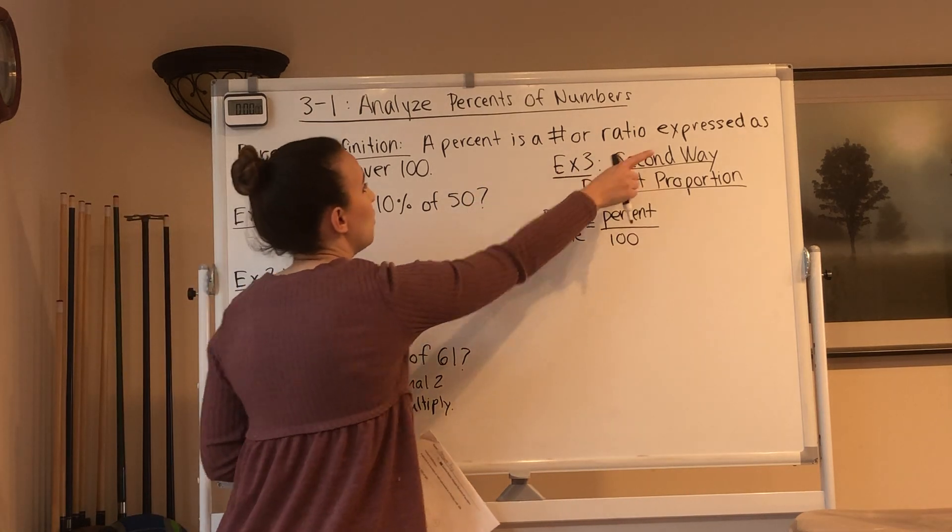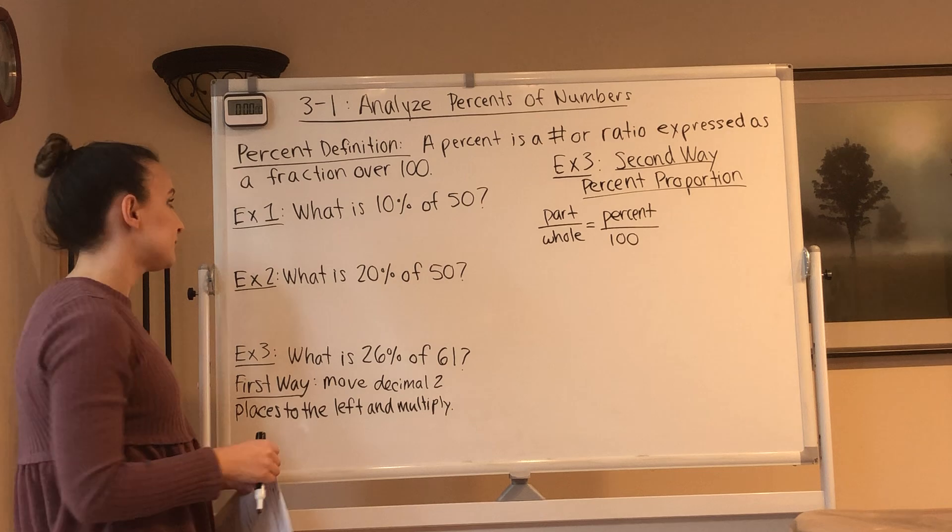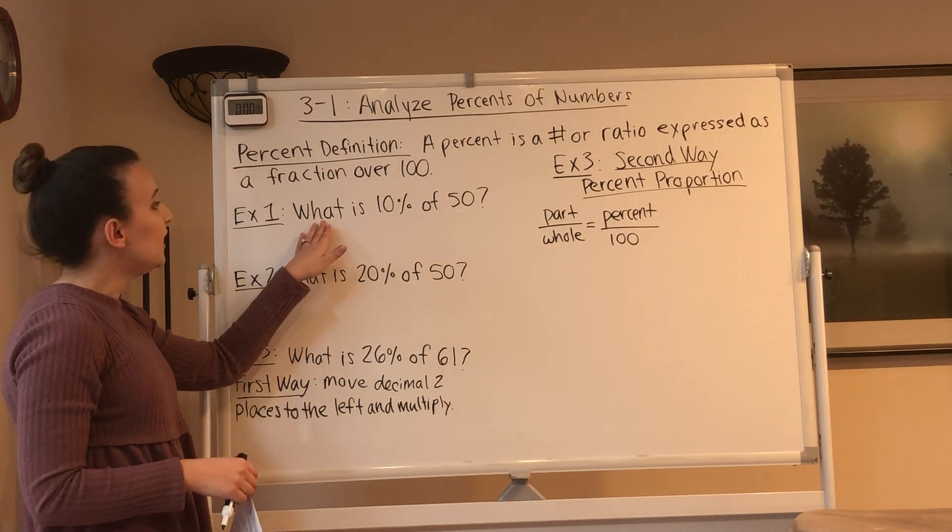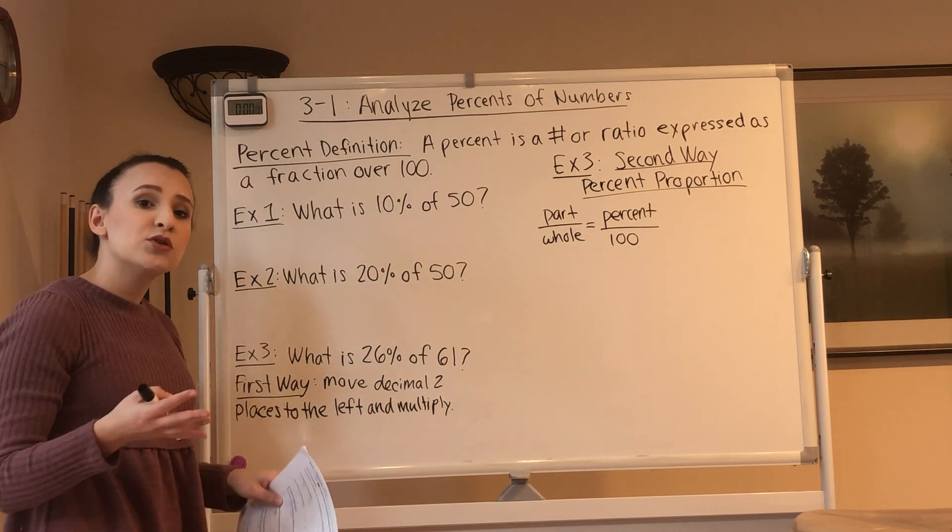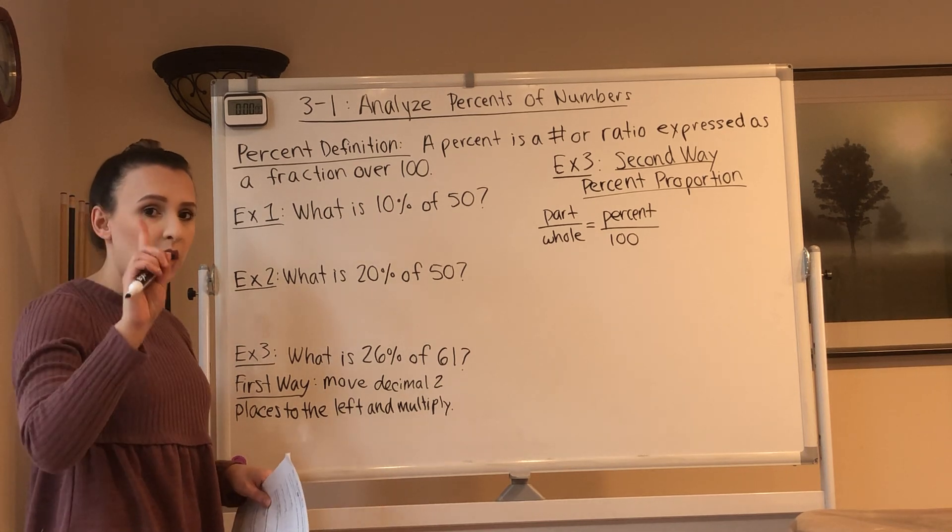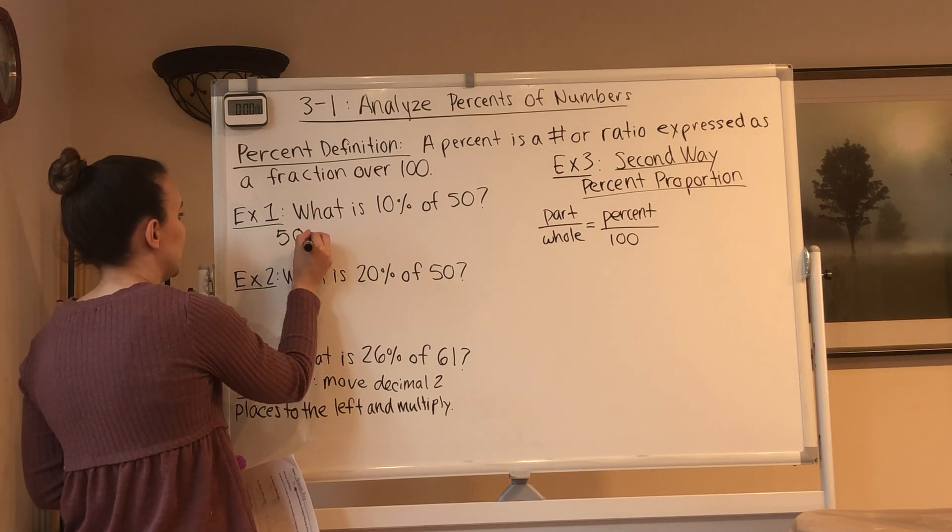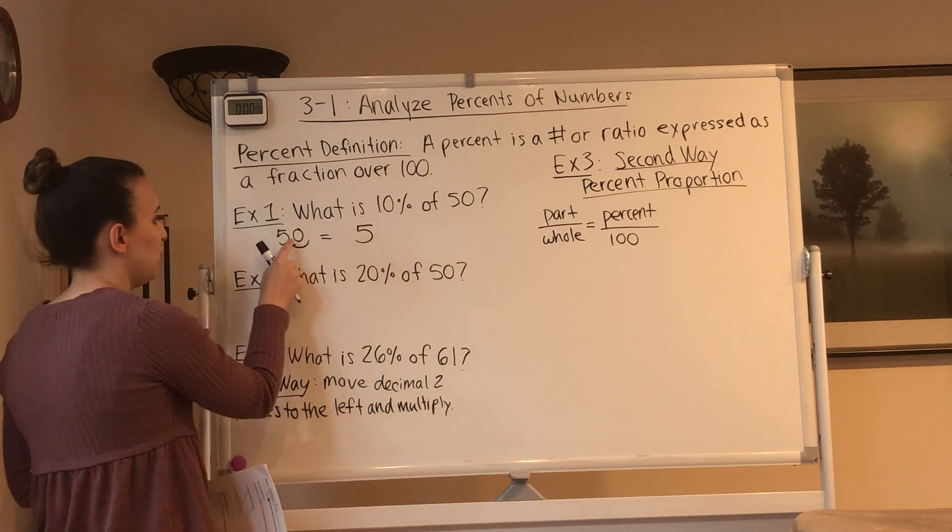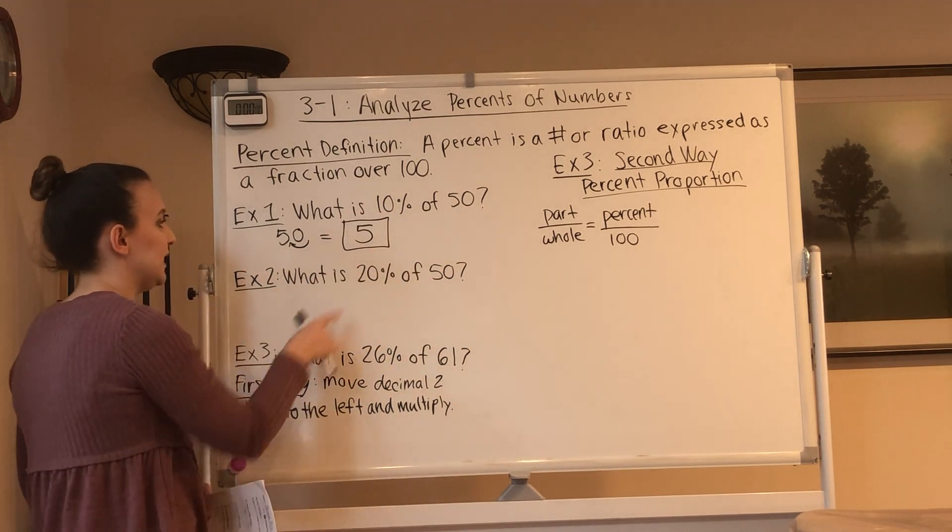Then I'm going to do the three examples from the book for 3-1. So what we're starting with is 3-1, analyze percents of numbers. The definition of percent: A percent is a number or ratio expressed as a fraction over 100. So this should be a review. Example one, what is 10% of 50? When we take 10% of a number, all we have to do is move the decimal over one place. So if we take 50 and we move the decimal over one place, that gives us 5. So 10% of 50 is 5.